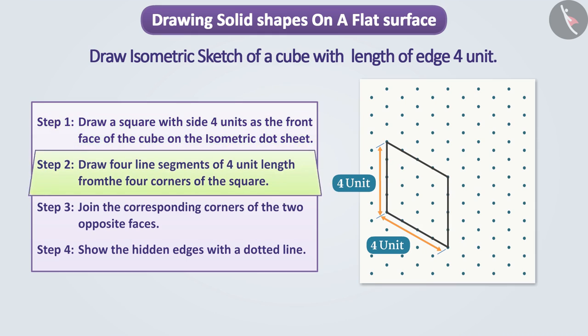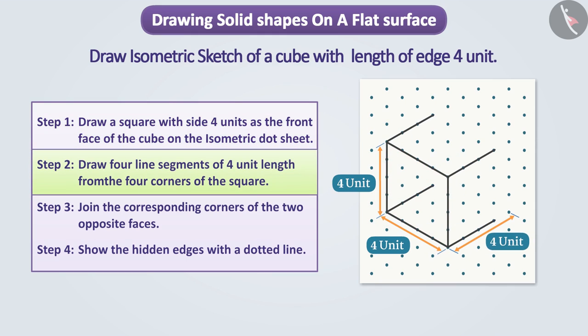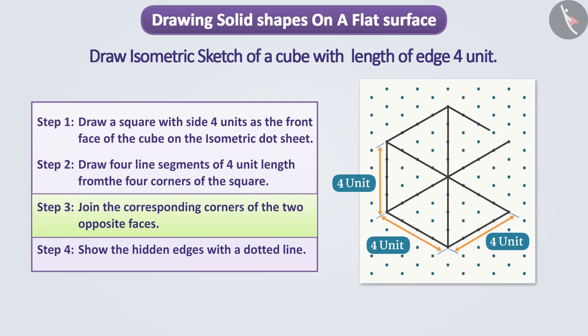Step 2. Draw 4 line segments of 4 unit length from the four corners of the square in this way. Step 3. Now we will join the end points of the line segments in such a way that we get the back face of the figure exactly the same as its front face.